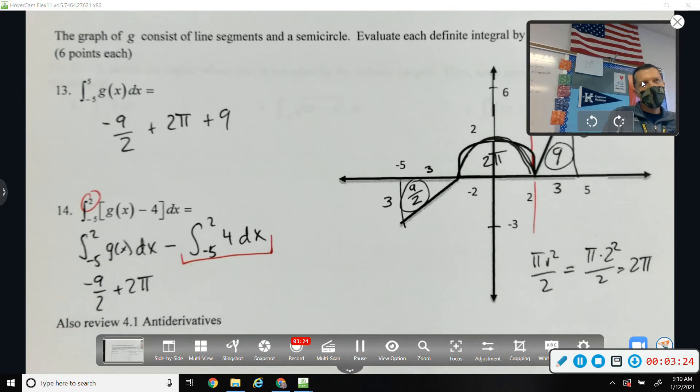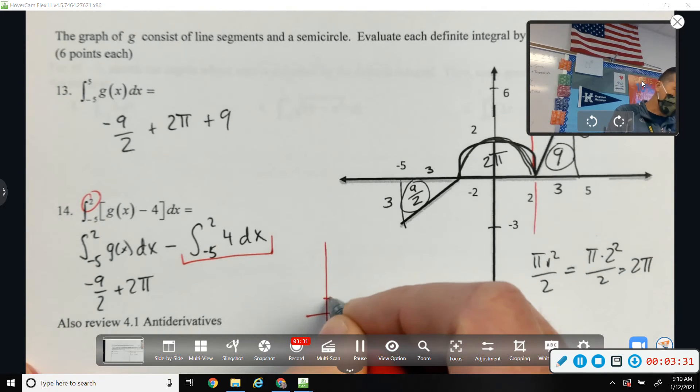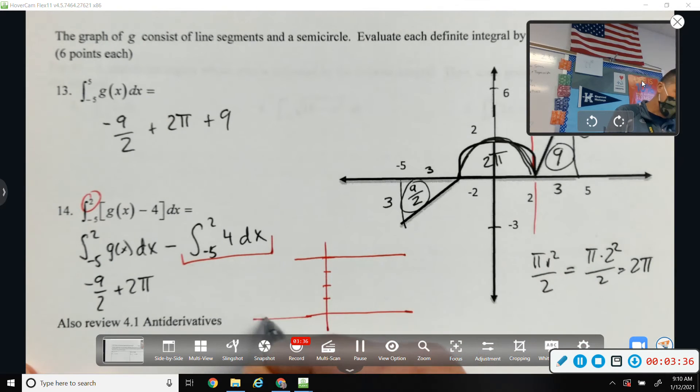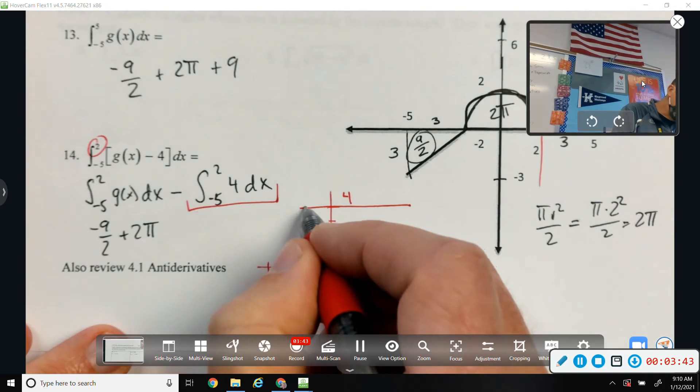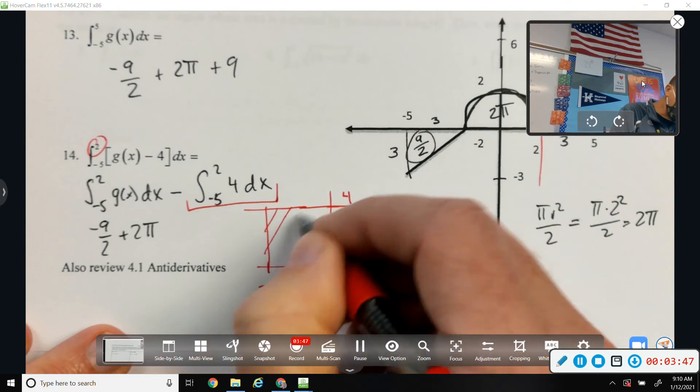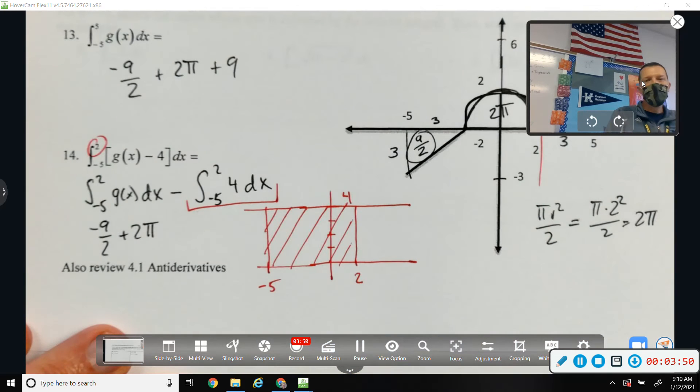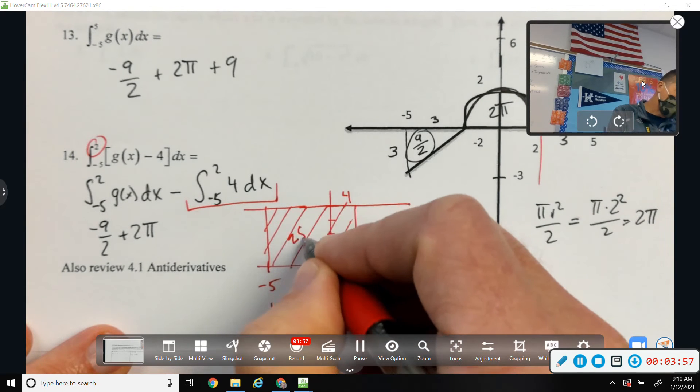Now, the integral from negative 5 to 2 of 4. Well, that seems easy enough that I might be able to figure that one out on my own here. So, from negative 5 to 2, 4 high, that's just the good old rectangle right there. That's 7 times 4. So, that area is 28.